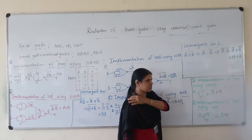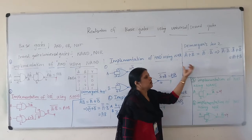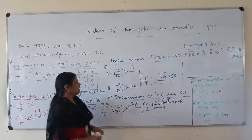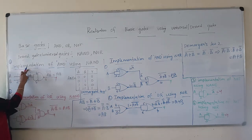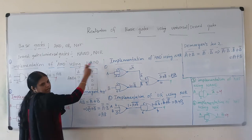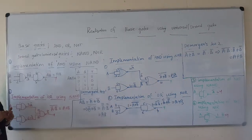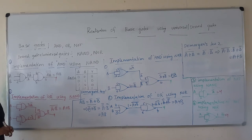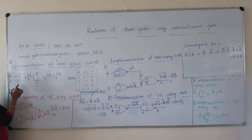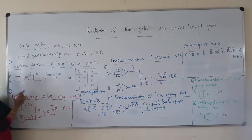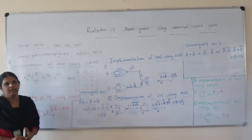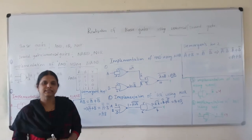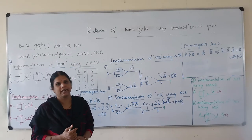These are the two De Morgan's laws we use while designing the circuits. Now we will discuss the first case: how to implement the AND gate using NAND gate. The logic symbol we use to represent the NAND gate has been discussed. The NAND stands for NOT AND. Therefore its truth table is always the reverse of the truth table of an AND gate.